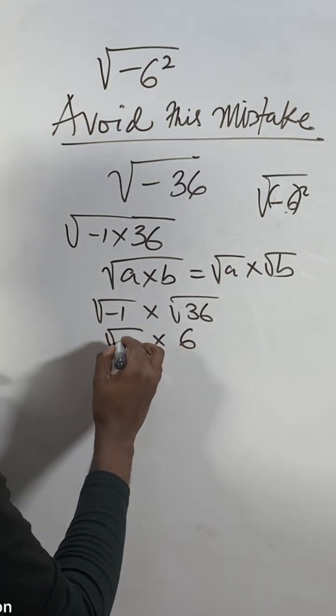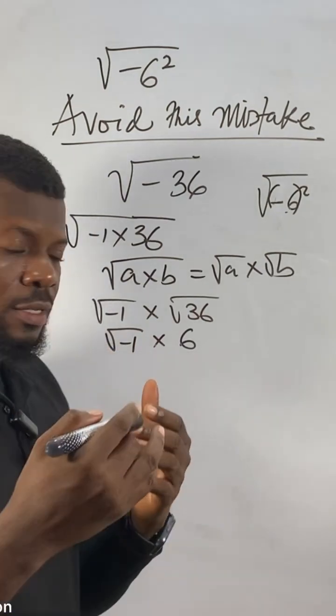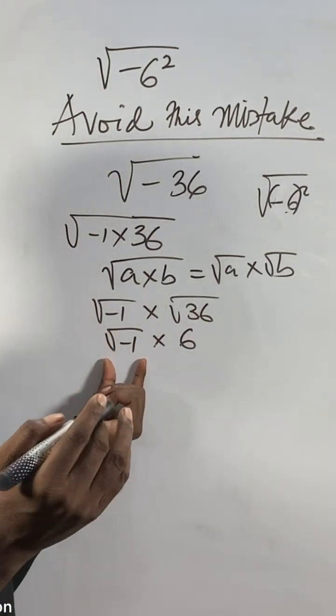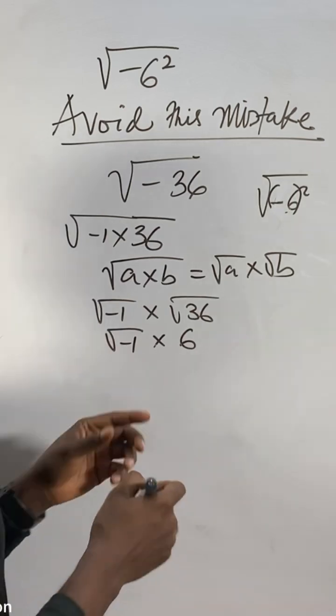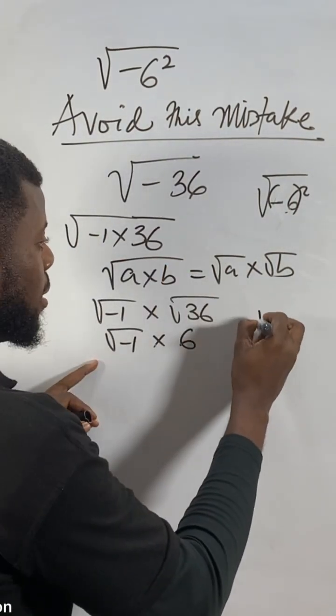This one a root minus one. So for complex number you will call imaginary roots, imaginary number. This one then they call imaginary number, imaginary number, and they use something carry represent that operator i.